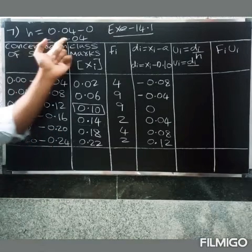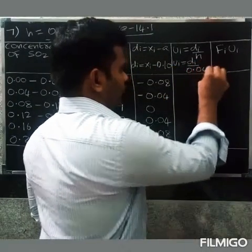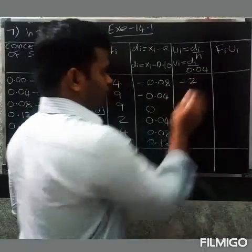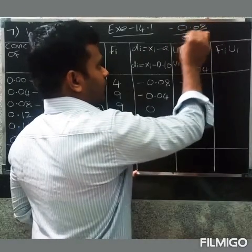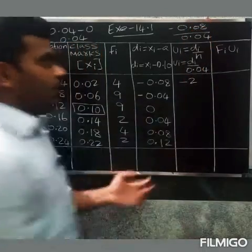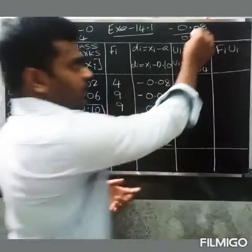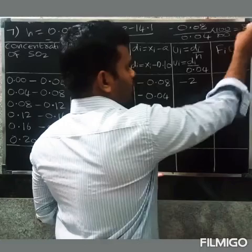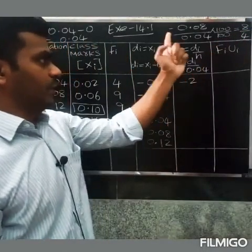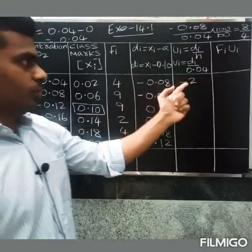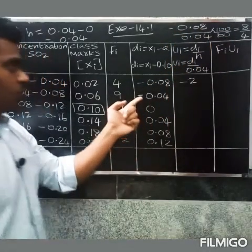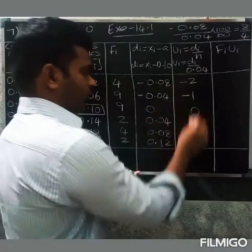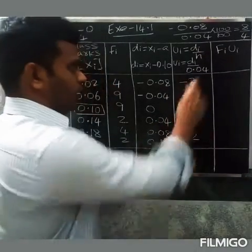Continuing the uᵢ values: 0.08 divided by 0.04 = 2, and 0.12 divided by 0.04 = 3. So the uᵢ column reads: minus 2, minus 1, 0, 1, 2, 3. To handle decimals, we multiply numerator and denominator by 100 and divide directly, e.g., 8 divided by 4 = 2.